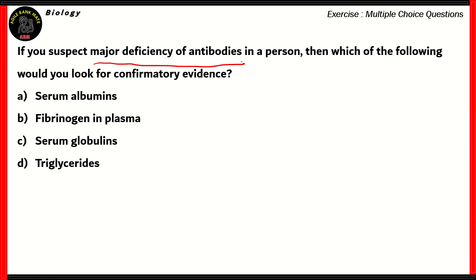We're looking at major deficiency of antibodies. What are antibodies? First of all, they're found in the serum. So that means you can find them in plasma, you can find them in blood, you can find them in lymph, etc. So, they're found in response to antigens. They're there for protection.